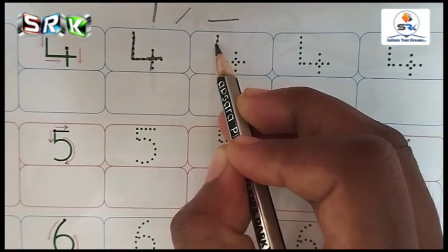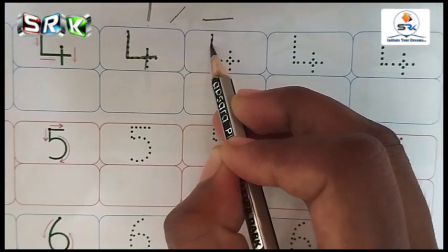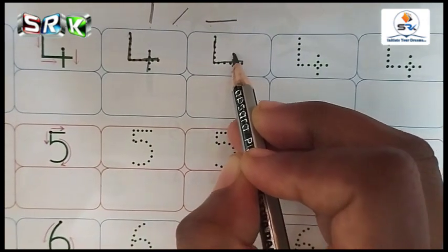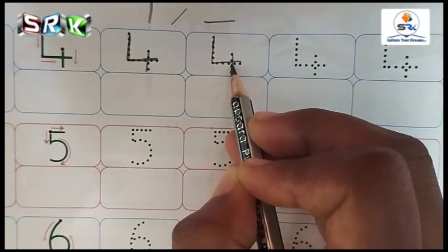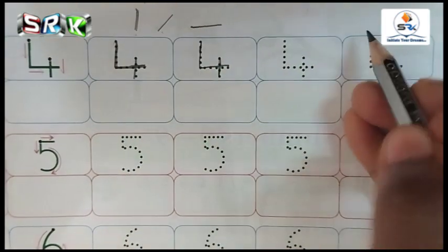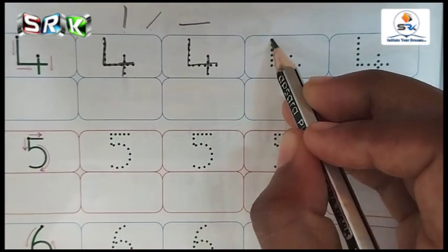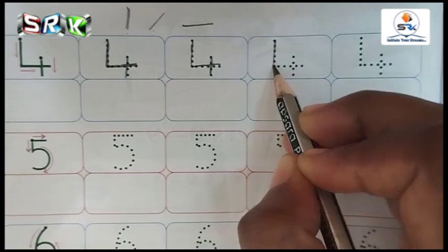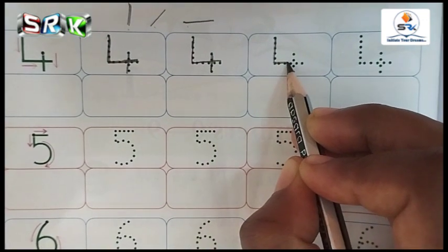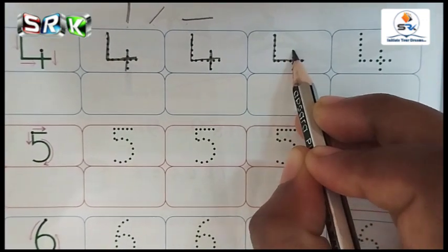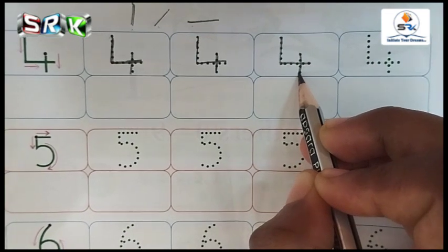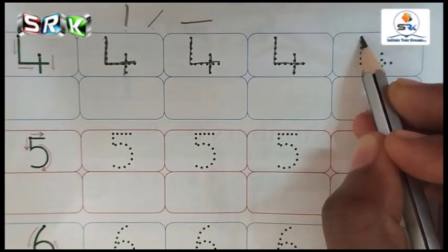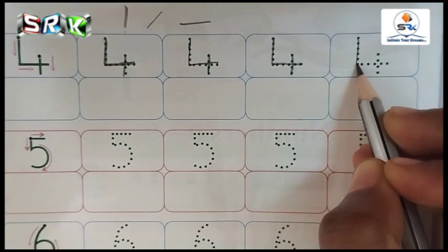So similarly you have to write the next box. You start the first point. Come slowly. And come slowly. Don't take your hands. And come down. Go to next box. You come slowly and write.